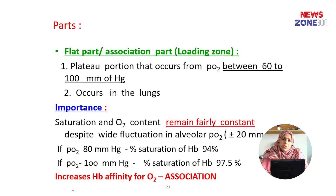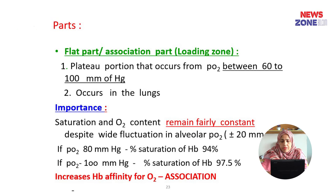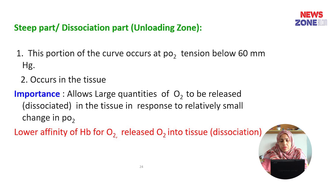The oxyhemoglobin dissociation curve has two parts. The flat part (association part) is the plateau portion occurring between partial pressure of oxygen of 60–100 mmHg; it occurs in the lungs. Its importance is that saturation and oxygen content remain fairly constant despite wide fluctuations in alveolar PO2 — for example, at 80 mmHg saturation is 94% and at 100 mmHg it is 97%. The steep part (dissociation part) is the unloading zone occurring at PO2 below 60 mmHg in the tissue, allowing large quantities of oxygen to be released in response to relatively small changes in PO2.